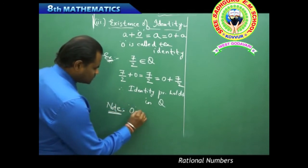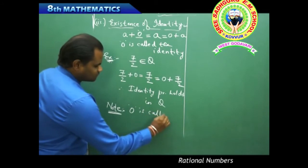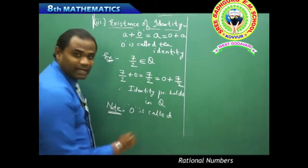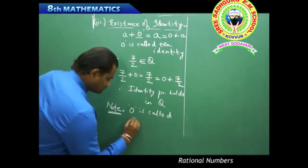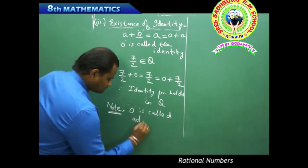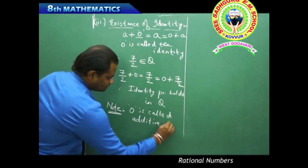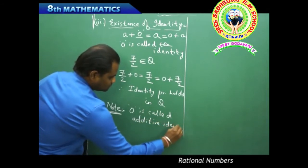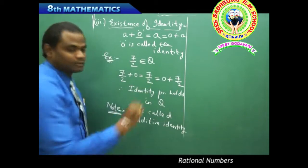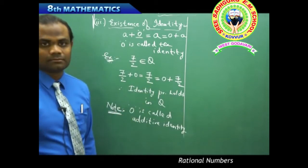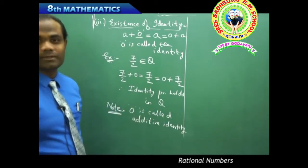Zero is called the additive identity under addition.